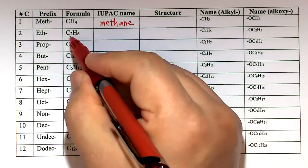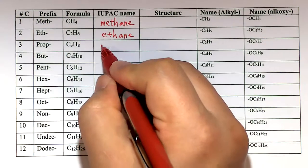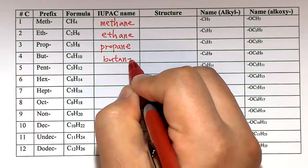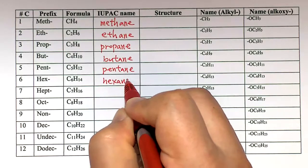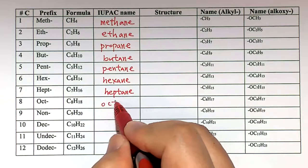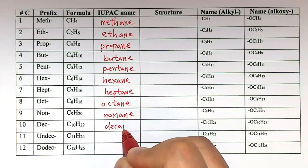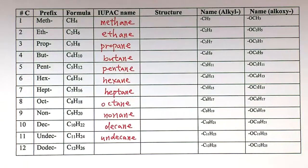For 2 carbons: ethane. Then propane, butane, pentane, hexane, heptane, octane, nonane, decane, undecane for 11, and dodecane for 12.